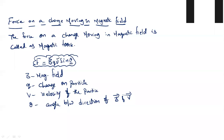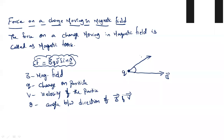Theta is the angle between magnetic field and the direction of velocity. Suppose this is the direction of magnetic field and this is the direction in which the charged particle Q enters the magnetic field — this is the direction of velocity. Theta is the angle between direction of magnetic field and velocity. This is the expression for force on a charged particle moving in the magnetic field.